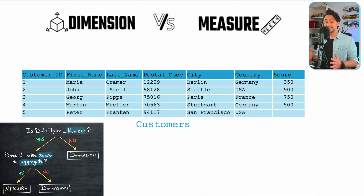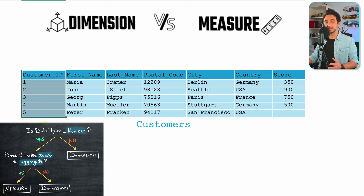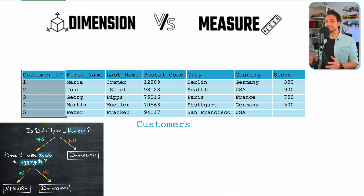Let's practice by checking our datasets and assigning each field to either dimension or measure. We'll do the Customers table together, then you can pause the video to do Products and Orders. Starting with the first field — customer ID — it is a number, so we can't automatically call it a dimension. We jump to the next question: does it make sense to aggregate it?